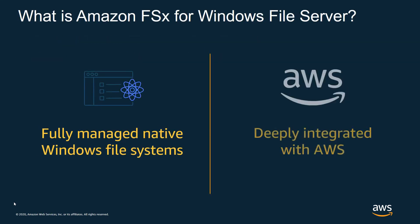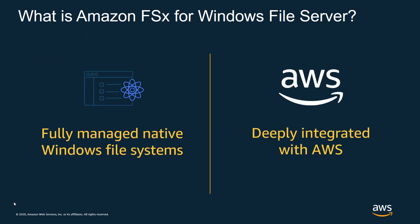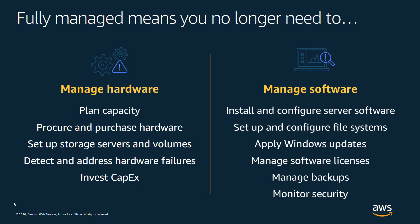So what is Amazon FSx for Windows File Server? It's Amazon's fully managed native Windows File System service, integrated with the rest of the AWS ecosystem. Fully managed means you no longer need to manage the hardware or software to provide native Windows File Server services to your users. We take care of setting up the hardware, servers, and volumes, and monitoring for hardware failures. We also manage the software — setting up the Windows servers, patching, maintaining, and backing them up.